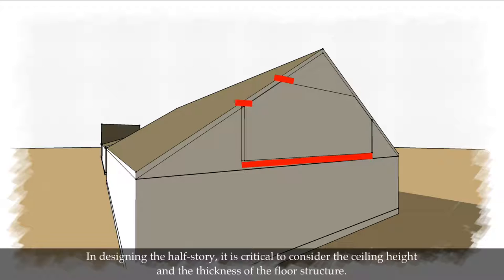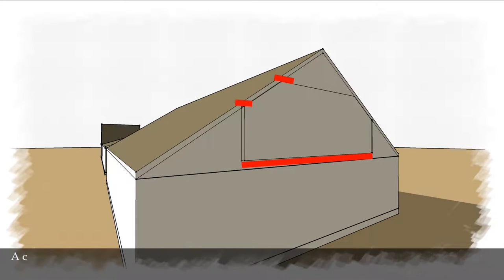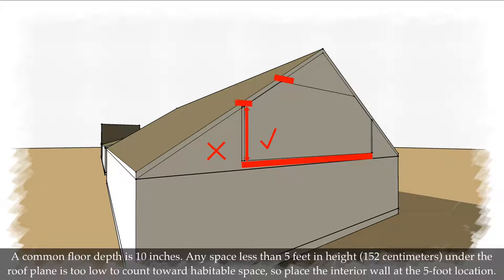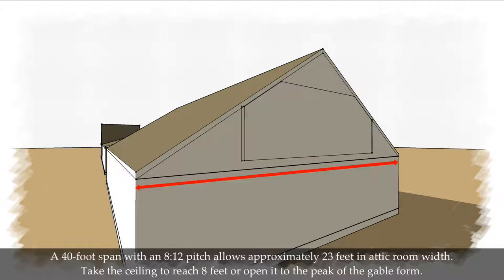In designing the half-story, it is critical to consider the ceiling height and the thickness of the floor structure. A common floor depth is 10 inches, for example. Any space less than 5 feet in height or 152 centimeters under the roof plane is too low to count toward habitable space, so place the interior wall at the 5 foot location. A 40 foot span with an 8-12 pitch allows approximately 23 feet in attic room width. Take the ceiling to reach 8 feet or open it to the peak of the gable floor.